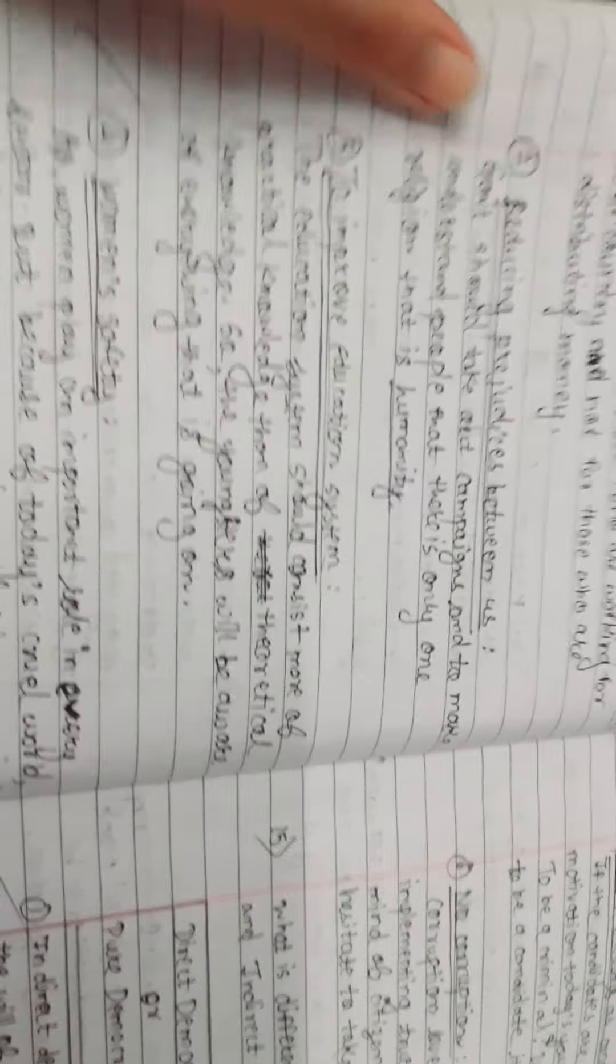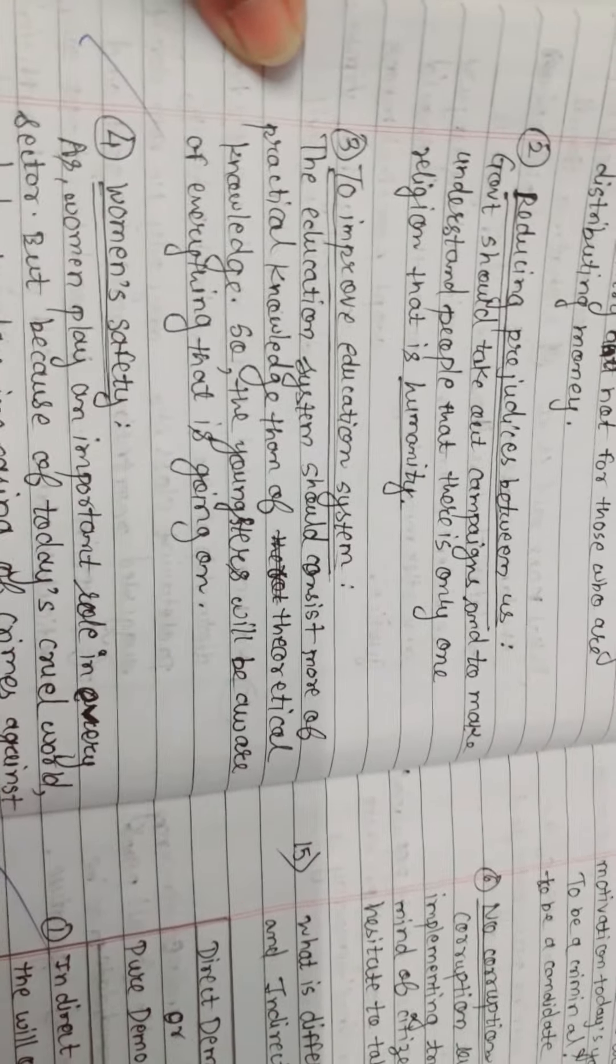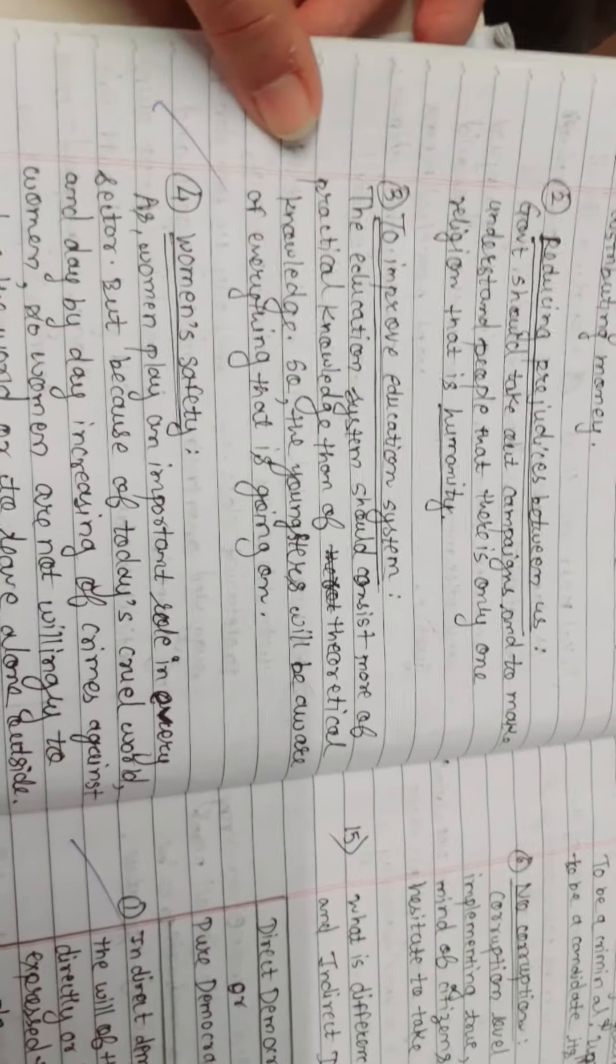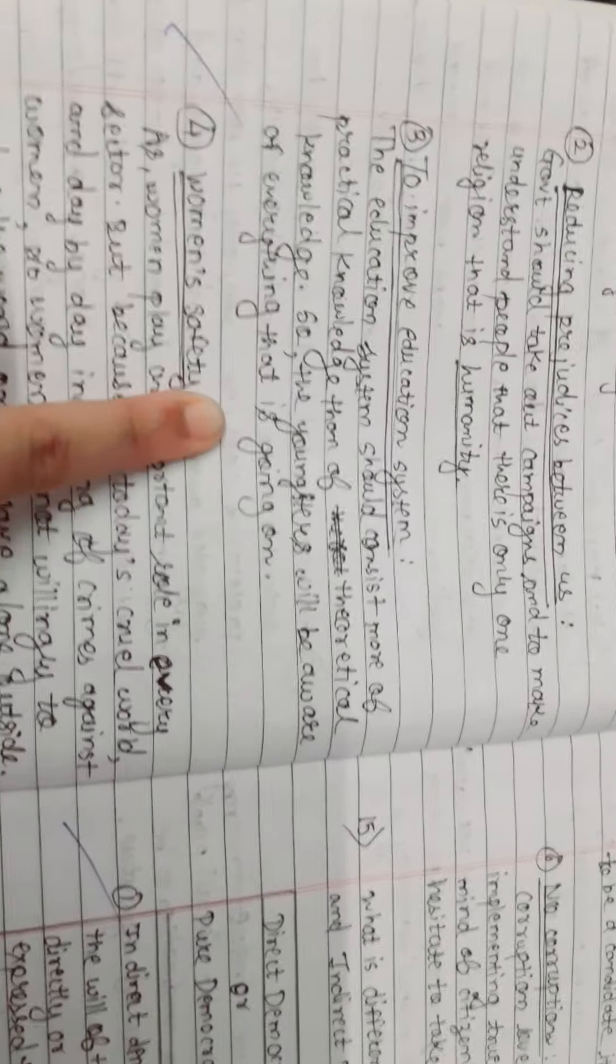To improve the education system. The education system should consist more of practical knowledge than theoretical knowledge, so the youngsters will be aware of everything that is going on.